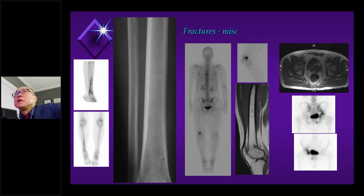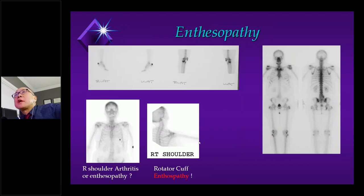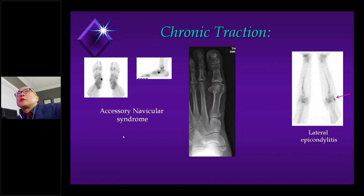Some fractures are very difficult to diagnose. A longitudinal cortical fracture is rare but can occur and may look like metastasis. Enthesopathy is not difficult to recognize as long as you know the tendon attachment: quadriceps tendon, patellar tendon, gluteal tendon attachments, and the greater tubercle for the rotator cuff. At sites of tendon attachment, chronic traction stress causes the accessory navicular syndrome. Lateral epicondylitis is an extreme version — an actual tear of the common extensor tendon visible even on planar bone scan.